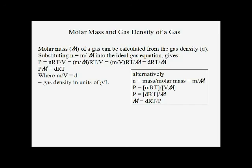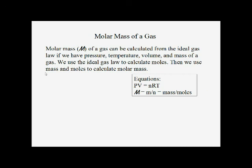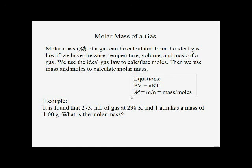Instead of memorizing a separate equation with molar mass, we can also find molar mass from a gas simply using the ideal gas law, knowing that molar mass is mass divided by moles. We need to know the mass of the gas, then use the ideal gas law to solve for moles. For example, a gas with a mass of 1 gram, with known volume, temperature, and pressure — we solve for moles and then divide mass by moles, giving a molar mass of 89.6 grams per mole.